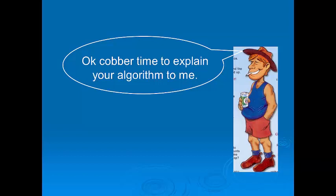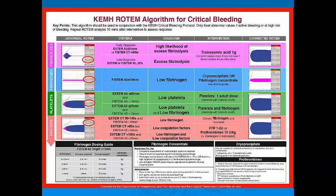Now that you understand the basics of ROTEM, the next step is to demonstrate how to use ROTEM in clinical practice. For demonstration purposes, we will use the 2016 version of the King Edward ROTEM Critical Bleeding algorithm to discuss the principles and explain the management of the most common abnormalities. It is important that you familiarise yourself with the algorithm used in your own particular hospital, and we acknowledge that the algorithm presented in this video may no longer be up to date in the future. The algorithm has been designed to encourage the assessment and treatment of disorders in a systematic and specific order.